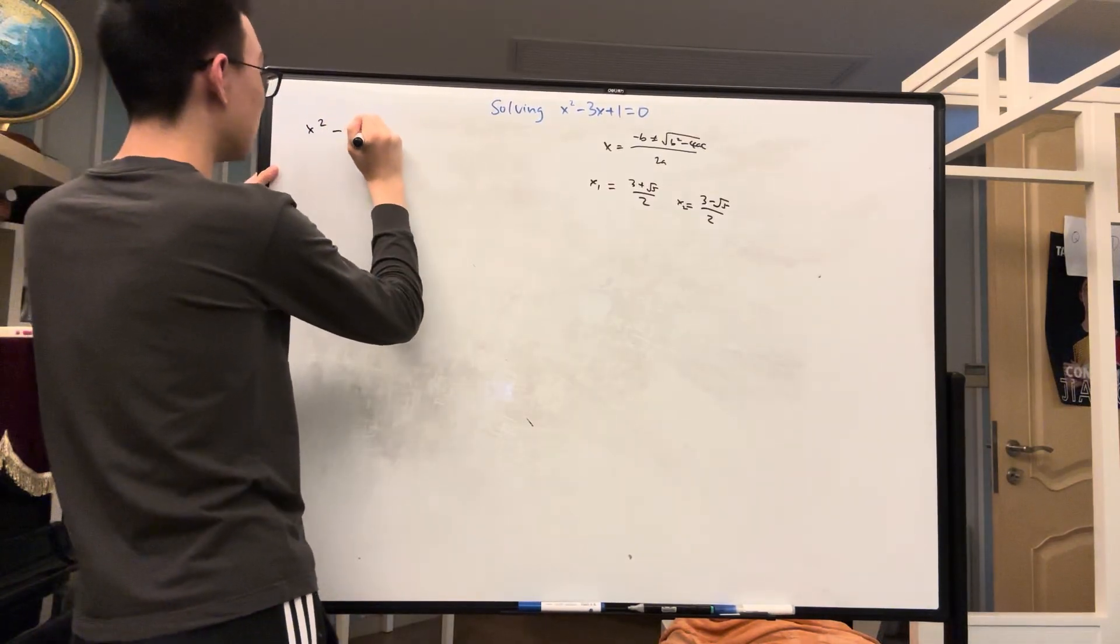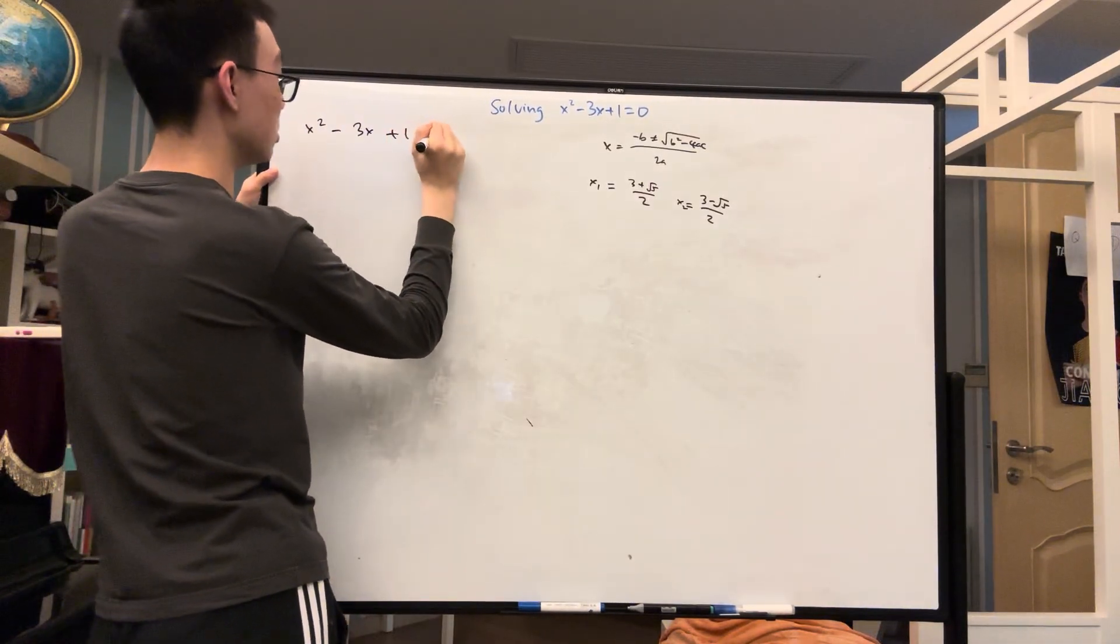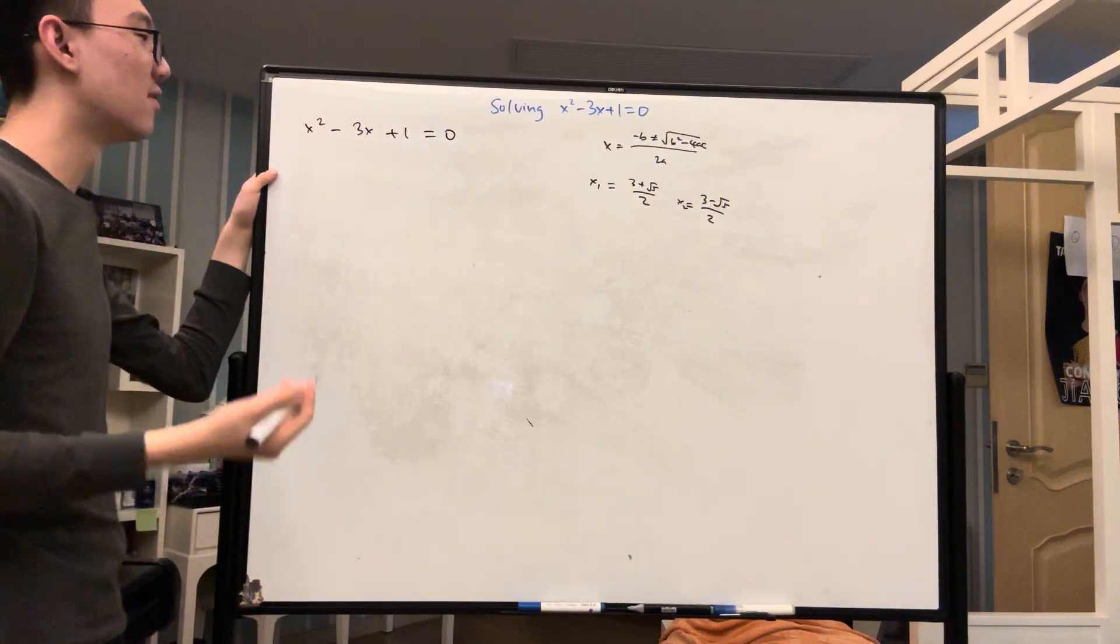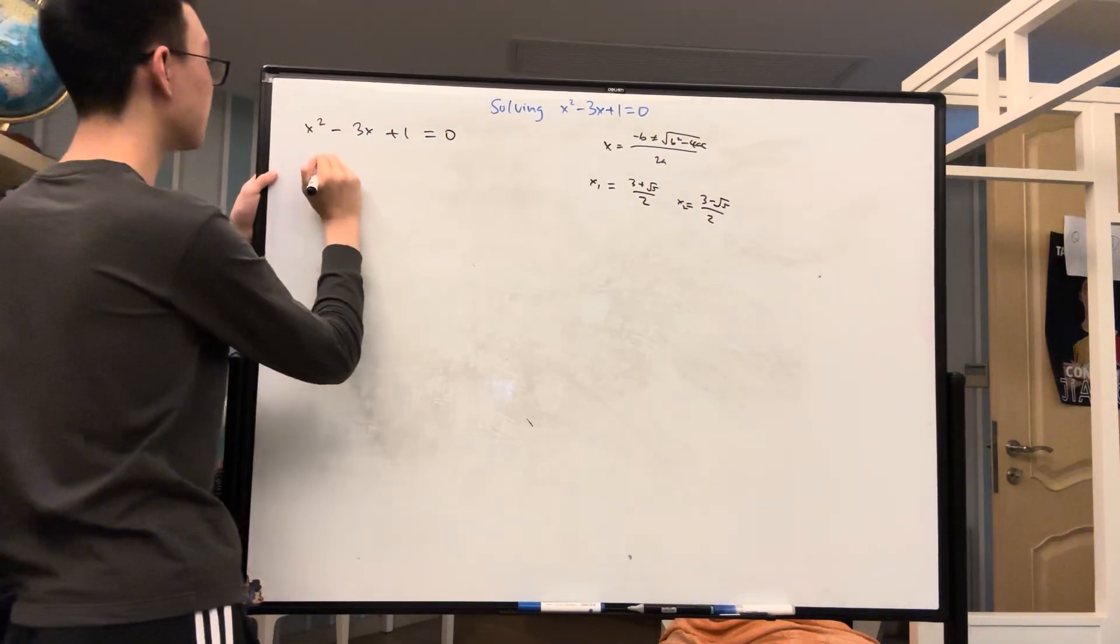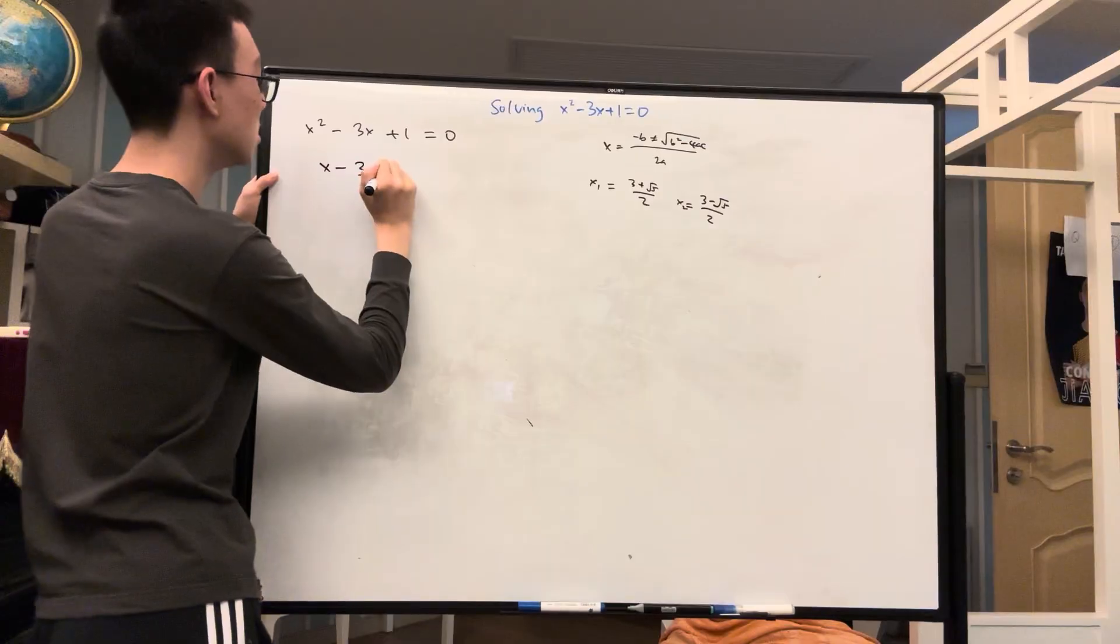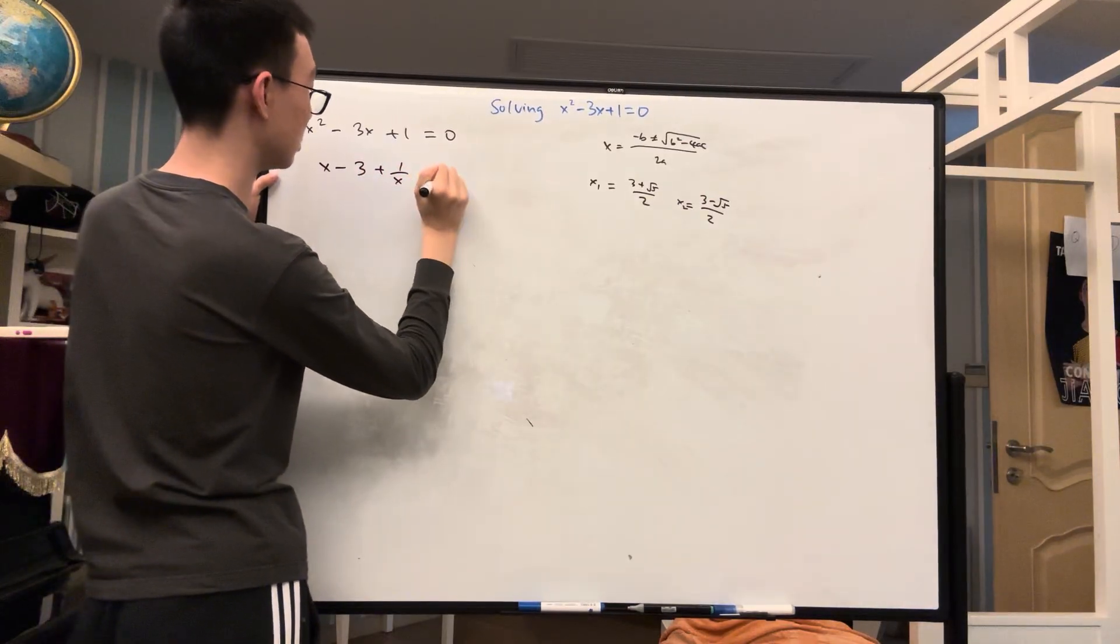So let's start with x squared minus 3x plus 1 is equal to 0. And then let's divide both sides by x to get x minus 3 plus 1 over x is equal to 0.